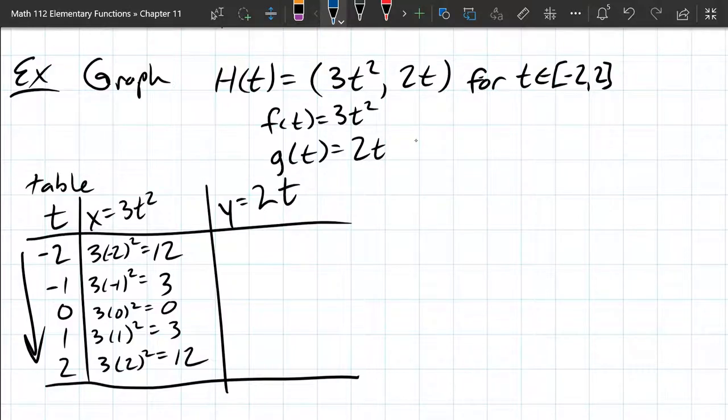Our function has two parts. The x-coordinate is 3t squared, the y-coordinate is 2t, and we're also given a domain of t values here, which is where the t values come from.